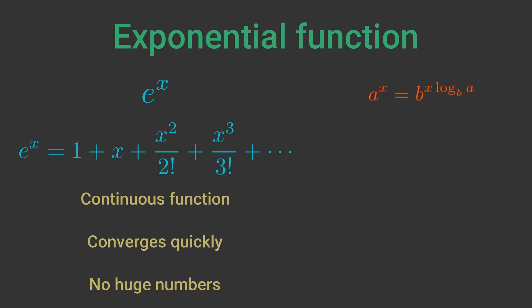It is possible to change the base of a power using this formula. This works for any positive values of a and b other than 1. So to find 2 to the power π we use these values: a the initial base is 2, x the exponent is π, and b the base we are converting to is e.